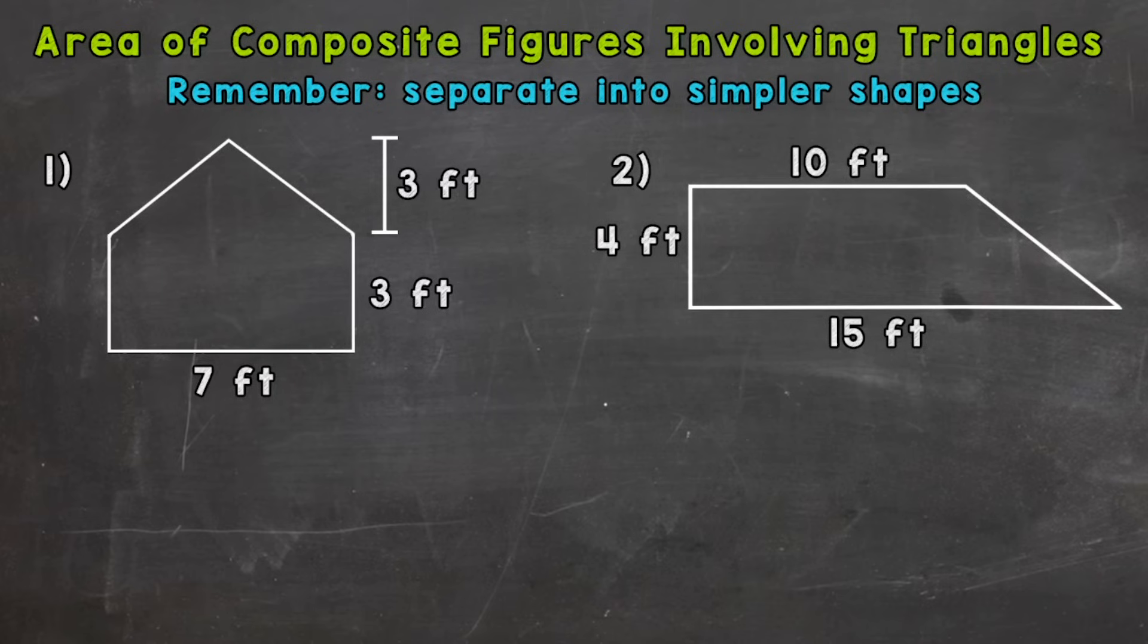We have two examples that we're going to go through together. Before we start, I want to mention that we're going to separate these figures into simpler shapes. We'll break them down into simpler shapes that we know how to find the area of, combine those areas to get the total area of these composite figures.